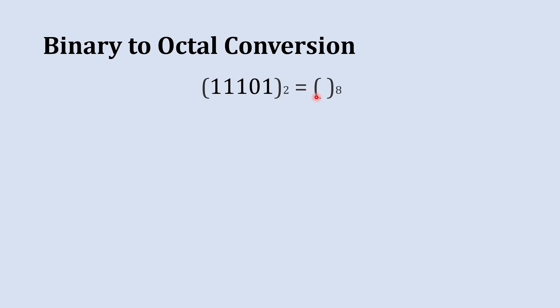Let's write this number 11101. This is the binary to octal conversion table and here we are going to use this table to convert this binary number into octal. Now let's start conversion.